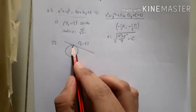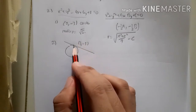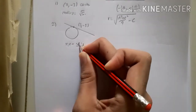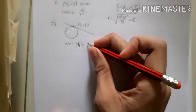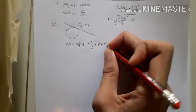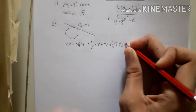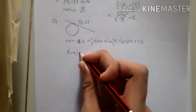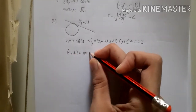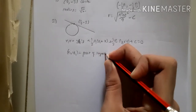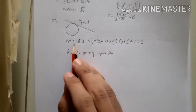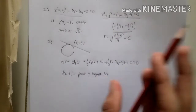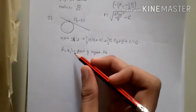We use a specific formula: if the circle is in general form and you need the tangent at a given point (x₁, y₁), the formula is: x₁·x + y₁·y + ½a(x₁ + x) + ½b(y₁ + y) + c = 0. Here (x₁, y₁) = (3, -5), a = -4, b = 6, and c = 8.